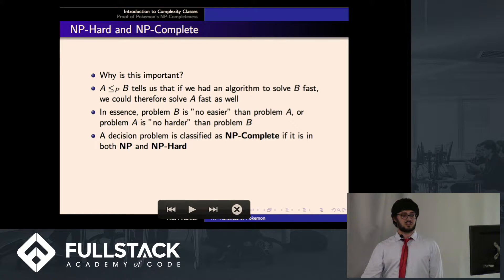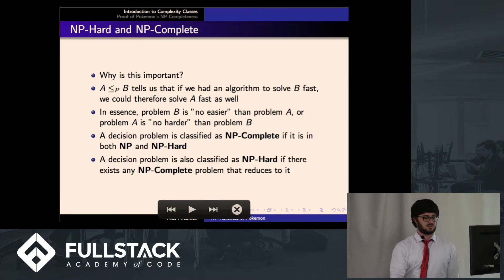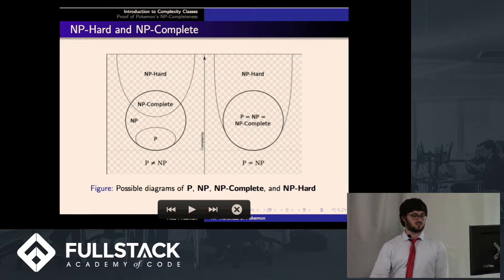So a decision problem can be classified as NP-complete if it is in both NP and NP-hard. Another stipulation for NP-hard is if there exists some NP-complete problem which reduces to it. And that's how we're going to set up this proof for Pokemon. So these are two possible diagrams of what P, NP, NP-complete, and NP-hard may look like, depending on if P were or were not equal to NP.